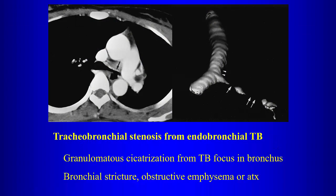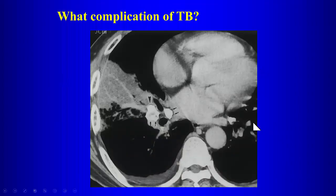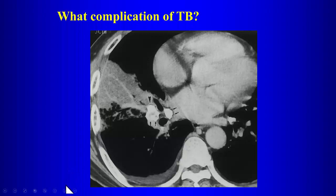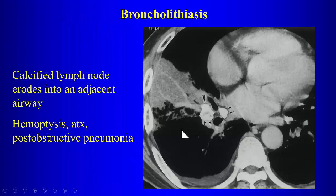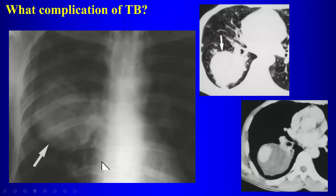Stenosis of airways can also occur from scarring. Broncholithiasis is another unusual but important complication of TB: calcified lymph nodes erode into the airways, causing obstruction and distal atelectasis. These are calcified nodes — that is broncholithiasis.